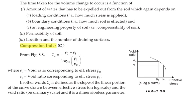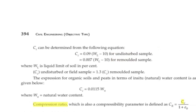The compression index CC is defined as the slope of the linear portion of the curve drawn between effective stress and void ratio. It is a dimensionless parameter. The formula for compression index CC is equal to (E0 minus E1) divided by log₁₀(P1 divided by P0), where E0 is the void ratio corresponding to effective stress P0, and E1 is the void ratio corresponding to effective stress P1.